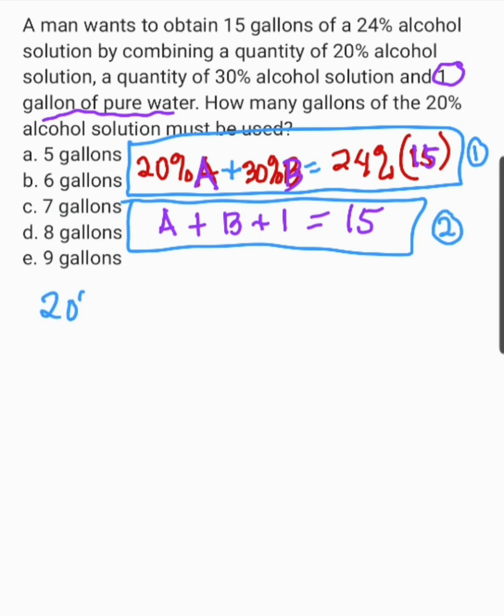Ang next natin gagawin ay i-combine natin itong equation number 1 at equation number 2. Now, since itong 20% of A plus 30% of B equals 24% of 15, kapag ganito na magkabilaan, meron tayong percent sign, pwede namang i-cancel lang yung percent sign. So, therefore, ganito yan siya. 20 of A plus 30 of B equals 24 times 15. I-decimal man natin or i-keep lang yung percent na number pero yung percent sign ay i-drop natin, pariho lang din yung sagot.